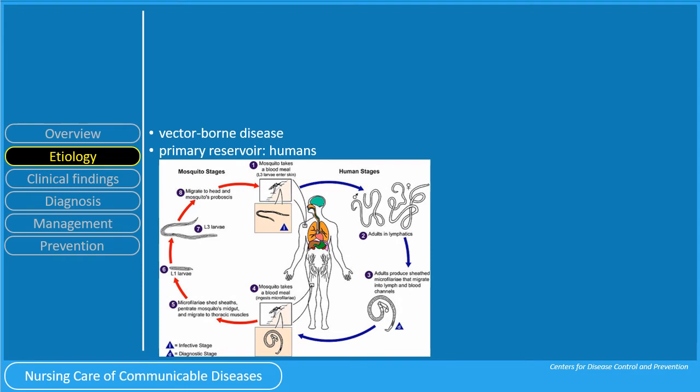This diagram from the Centers for Disease Control and Prevention illustrates the life cycle of Wuchereria bancrofti. During a blood meal, an infected mosquito — typically Mansonia and Aedes — introduces third-stage filariasis larvae into the skin of the human host, where they penetrate into the bite wound. They then develop into adults that commonly reside in the lymphatics.